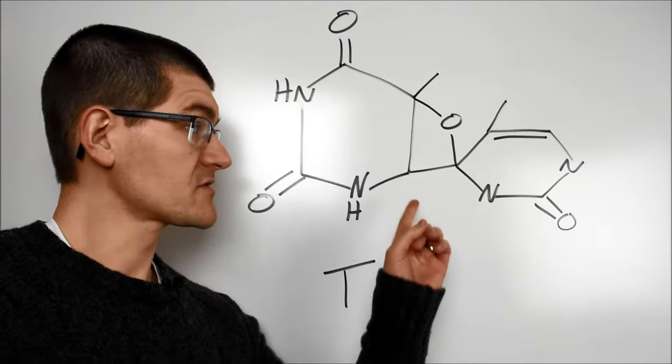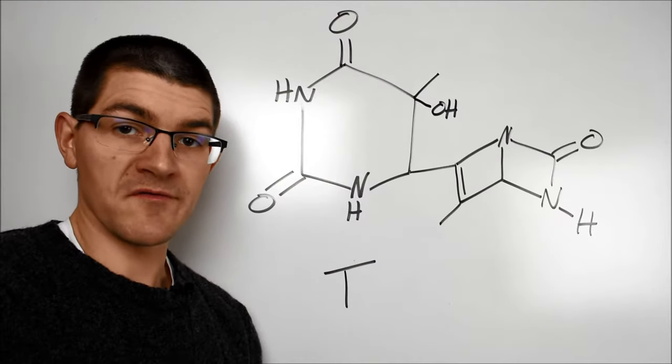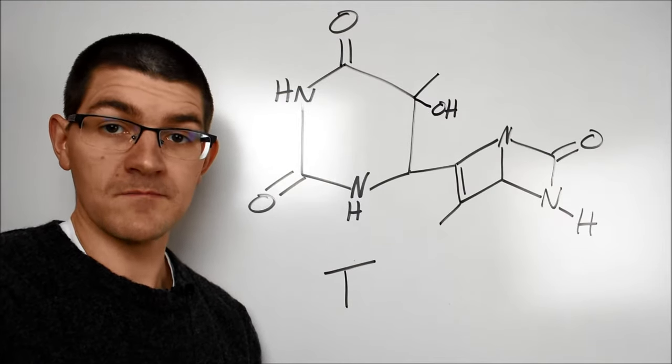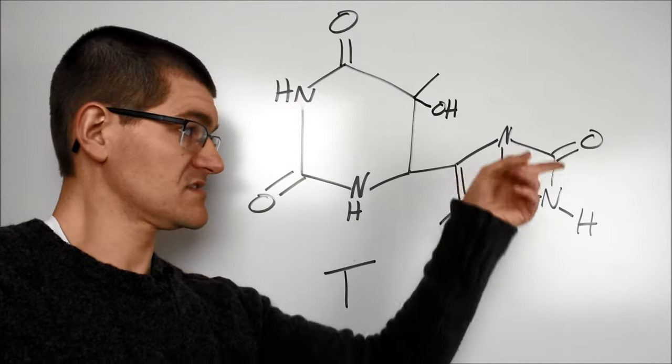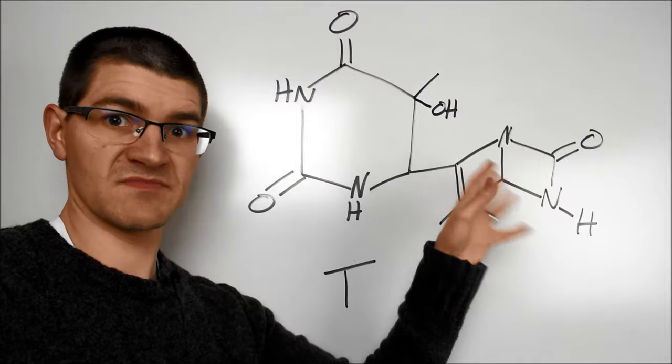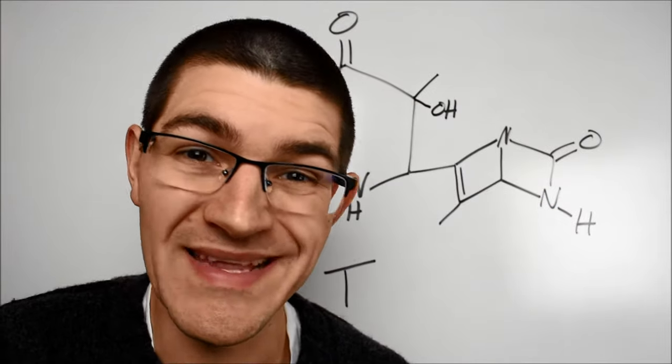The 6-4 photoproduct goes through this intermediate here. Finally, we get to something called the Dewar photoproduct, or Dewar pyrimidinone. It's basically just an isomerization of this pyrimidine base from the 6-4 photoproduct that gives us this weird bicycle sort of stuff going on. Okay, that's the gnarly stuff that UVB does to your body.